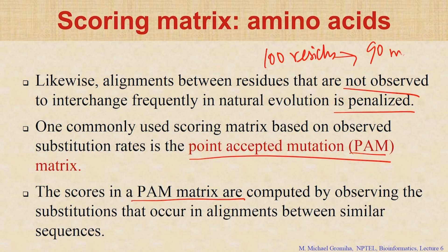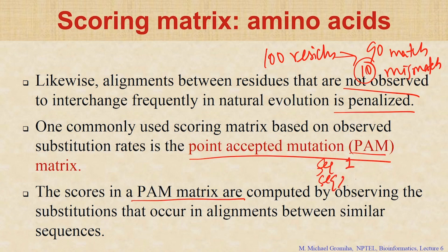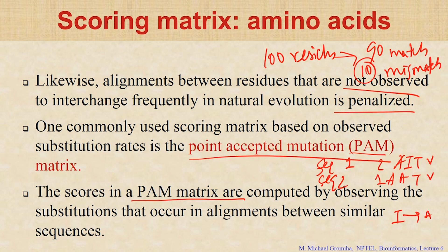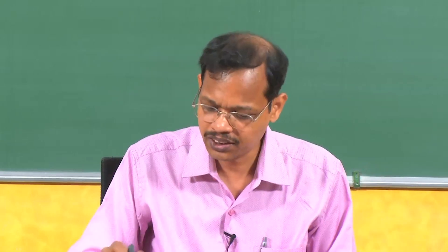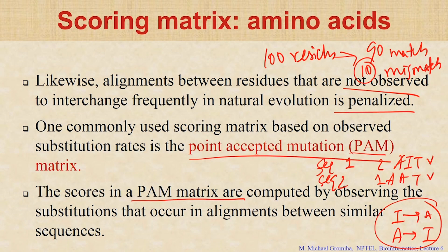Take these 10 mismatches and see the rate — which residue in sequence 1 is mutated to which residue in sequence 2. There are 2 sequences: sequence 1 and sequence 2. For example: A, I, T, V versus A, A, T, V — what is the substitution? I to A. When deriving the substitution matrix, they do not distinguish direction — sequence 1 to 2 or 2 to 1 — they treat these as symmetric. This is why the PAM matrix is a diagonal symmetric matrix.